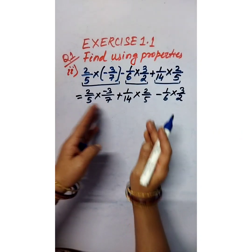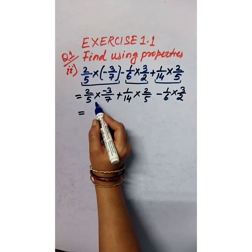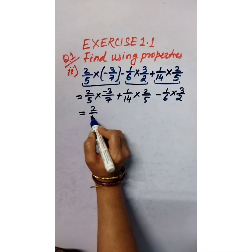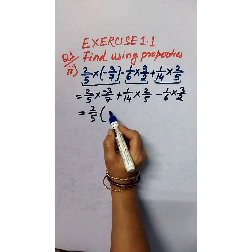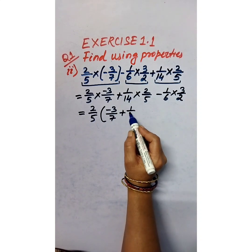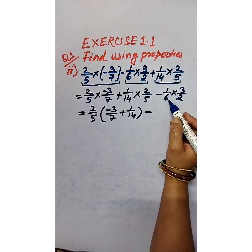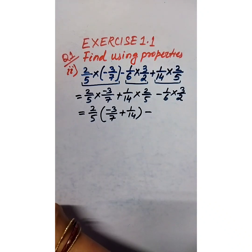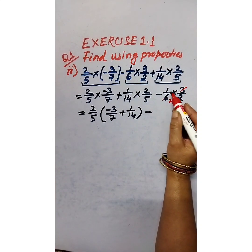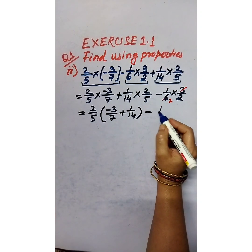We bring those two terms together because they share the common factor 2/5. So taking 2/5 out, what is left is negative 3/7 and 1/14. For the last term, minus 1/6 into 3/2 — we can simplify 6 and 3: 3 twos are 6, giving 1/4.